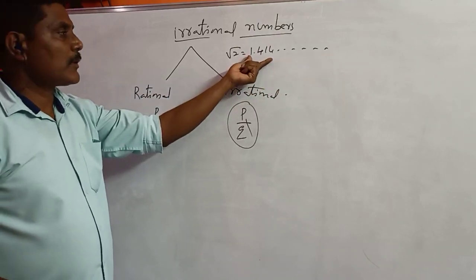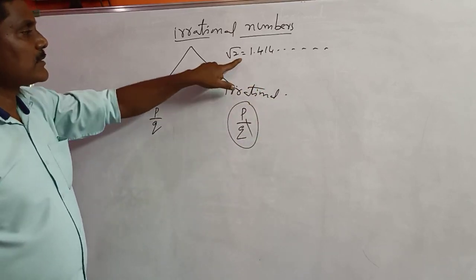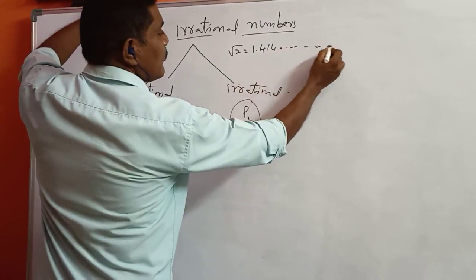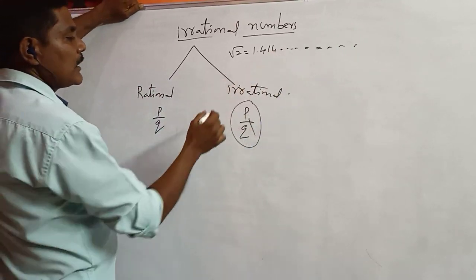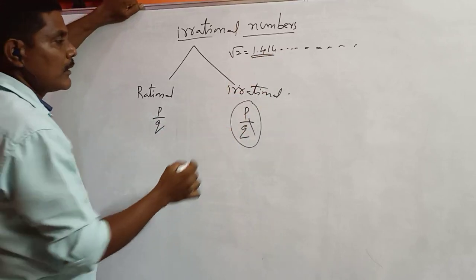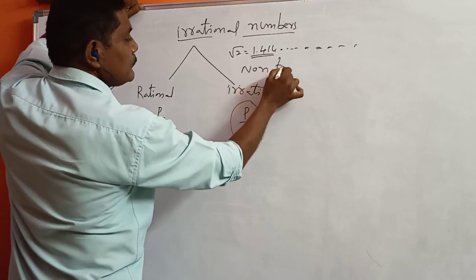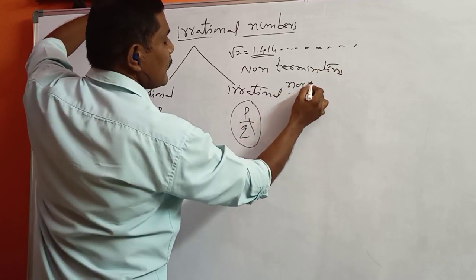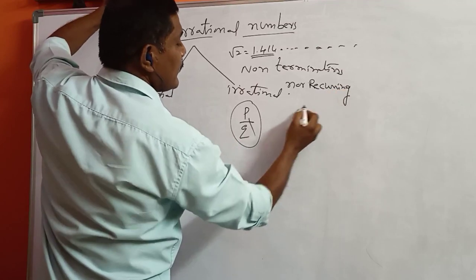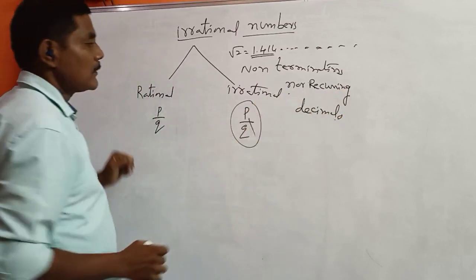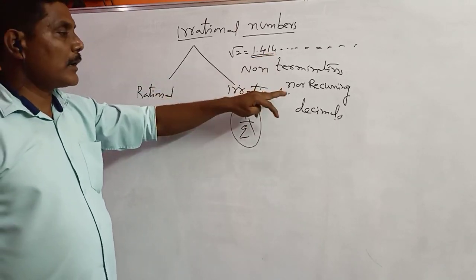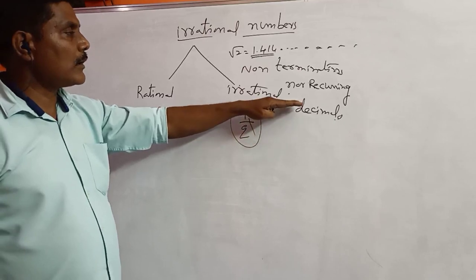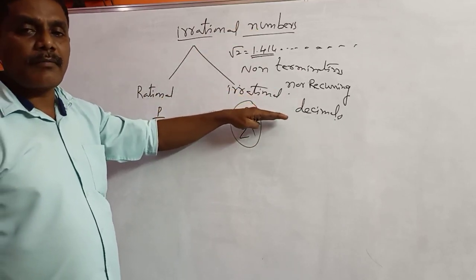We find it here up to 3 decimals, but if you continue the process, it goes on and on — no end. Therefore this kind of decimals are called non-terminating, non-recurring decimals. Non-terminating means they don't terminate, and non-recurring means no digits are repeating. So this type of numbers are called irrational numbers, which we cannot write in the form of p/q.